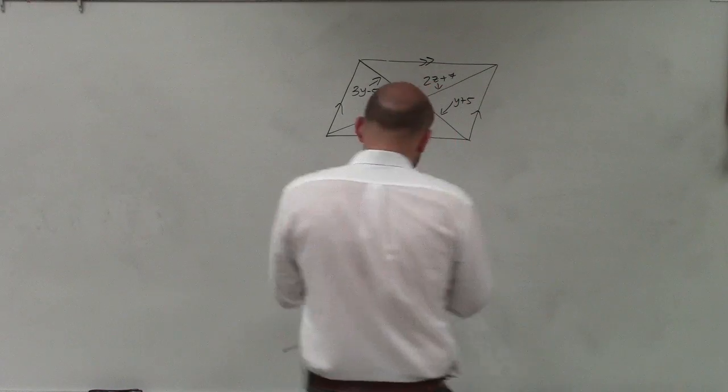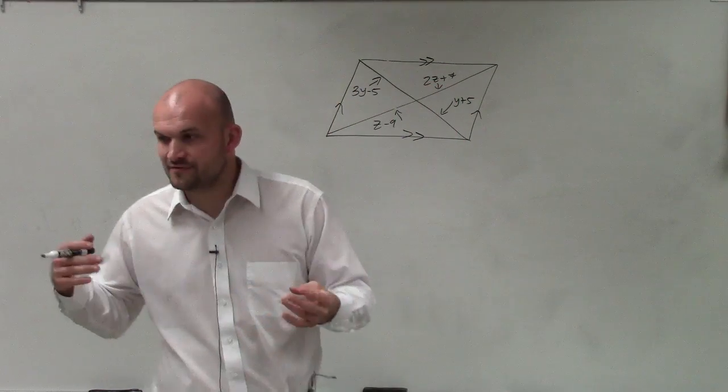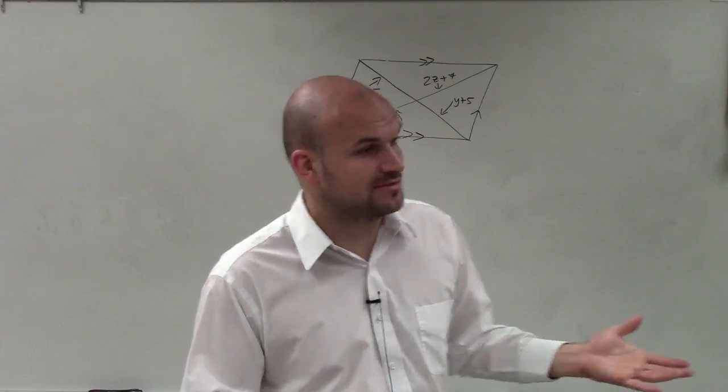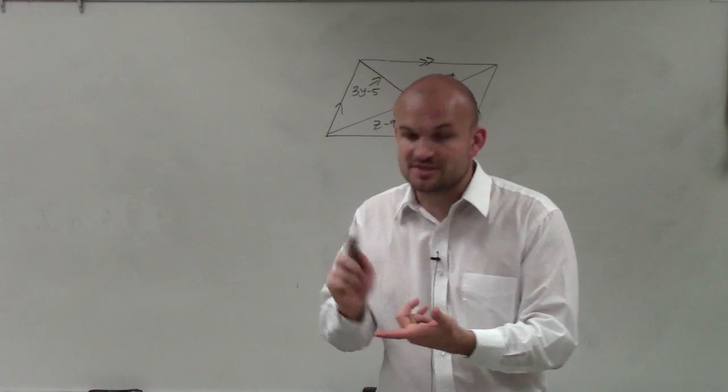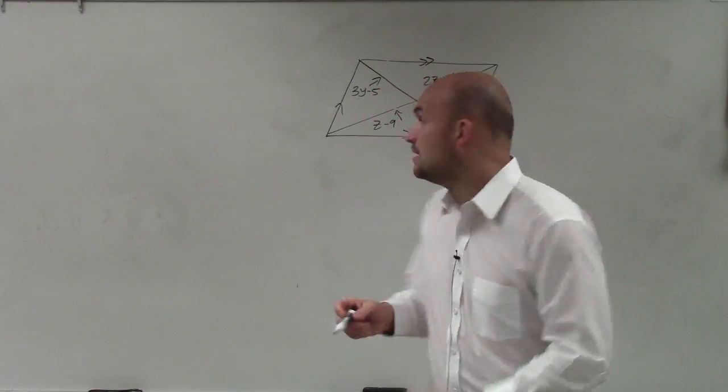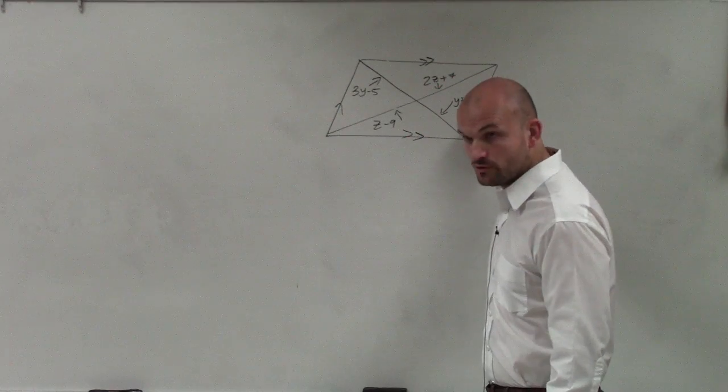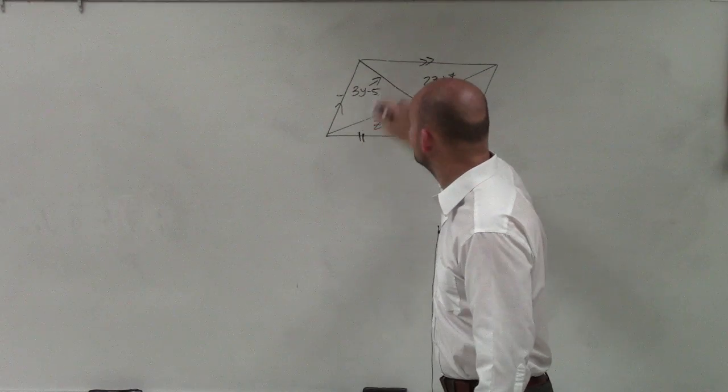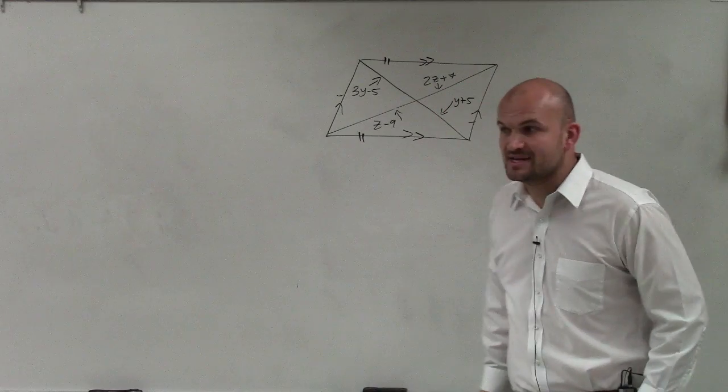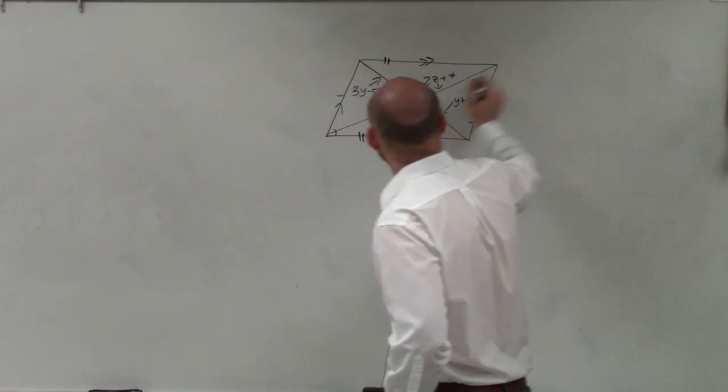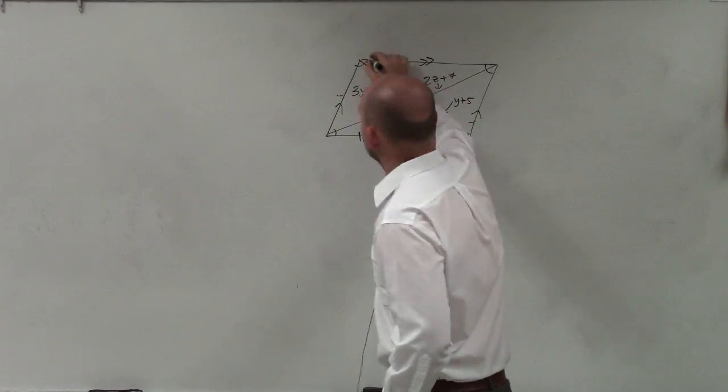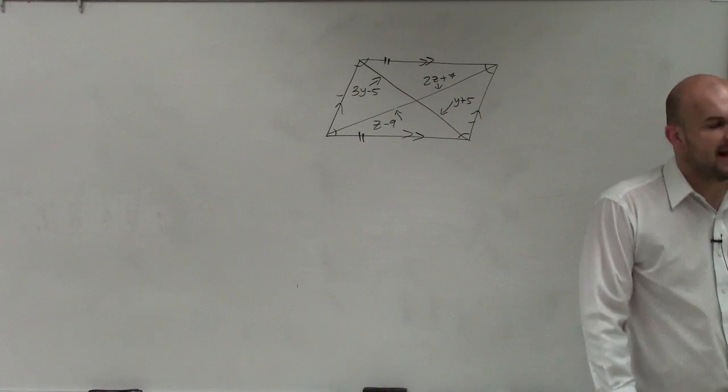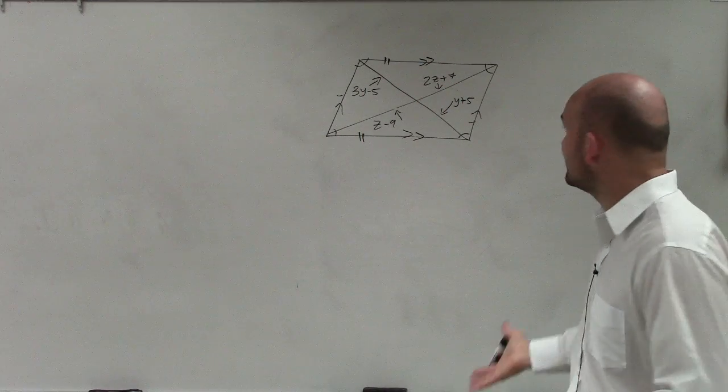So the characteristics of a parallelogram, and this is something that for those of you taking the chapter six test need to make sure you know, that the parallelogram has two sets of parallel sides. Opposite sides are congruent. And also, opposite angles are congruent.